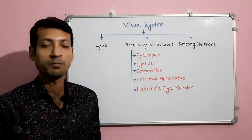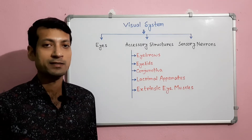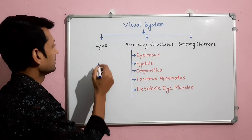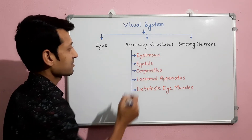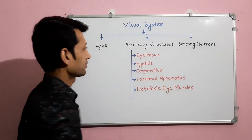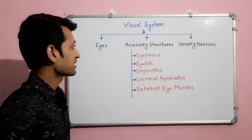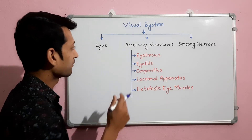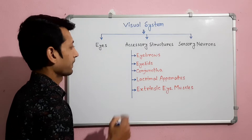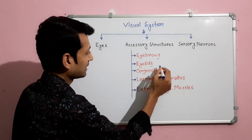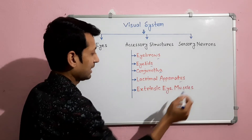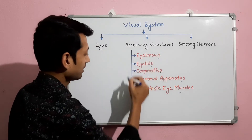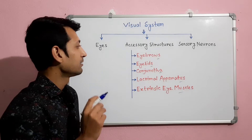The eye is a complex sensory organ that provides the sense of sight. The visual system includes the eyes, the accessory structures, and the sensory neurons. As today's discussion is on accessory structures of the eye, here I have shown the different accessory structures: eyebrows, eyelids, conjunctiva, lacrimal apparatus, and extrinsic eye muscles. I will now discuss all these accessory structures with figures and functions.